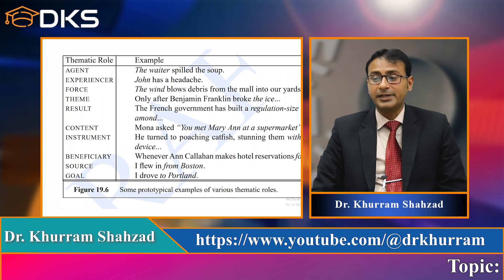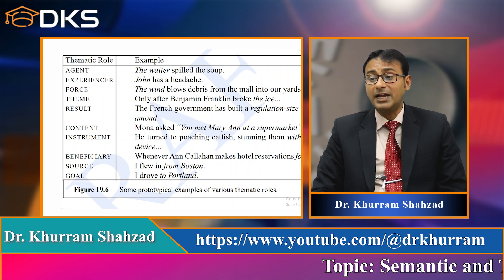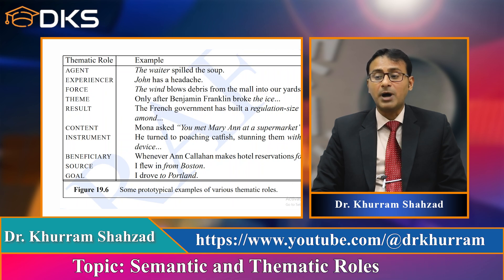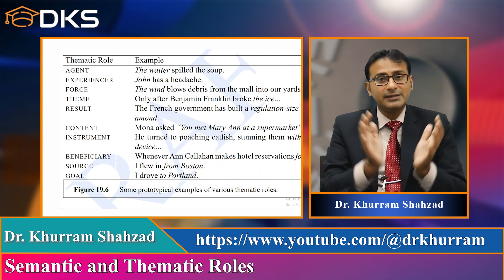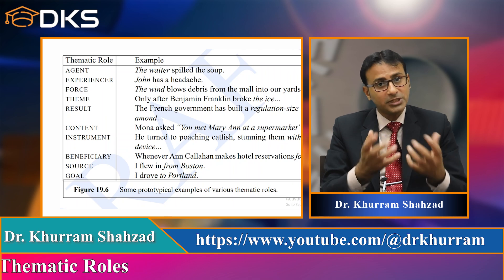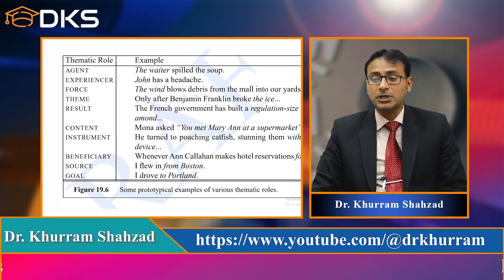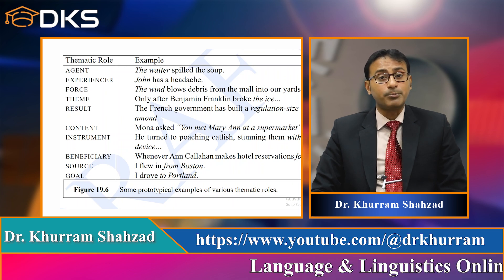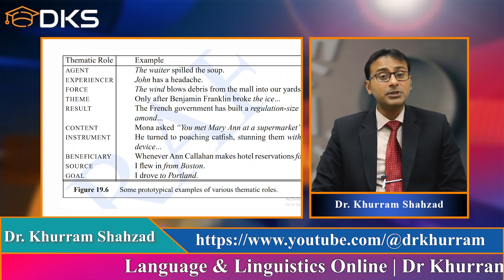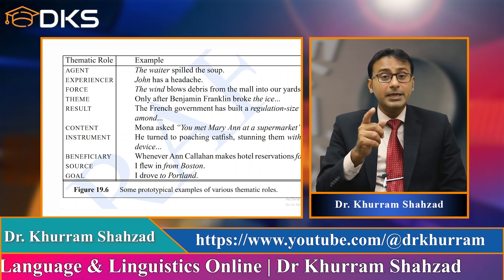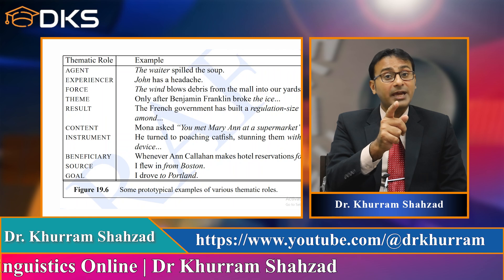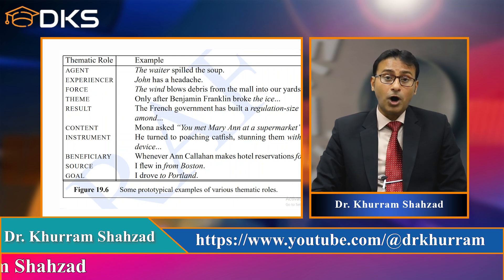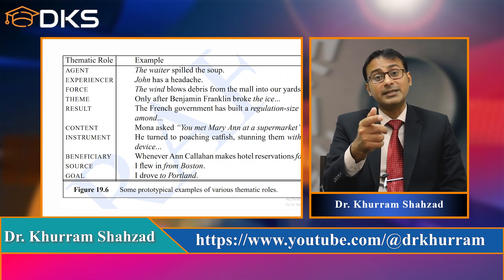Result: 'The French government has built a regulation-size baseball diamond' — the result is that regulation-size baseball diamond. Content: 'Mona asked, you met Mary Ann at a supermarket' — 'you met Mary Ann at a supermarket' is a complete sentence; it has content and a proposition in it. Instrument: 'He turned to poaching catfish, stunning them with a shocking device' — 'with a shocking device' is a prepositional phrase, and usually in a prepositional phrase we are making use of an instrument. 'I opened the door with a key' — 'with a key' is the instrument. 'He killed this man with a knife' — 'with a knife' is the instrument.